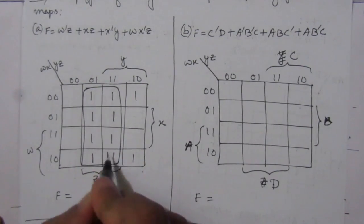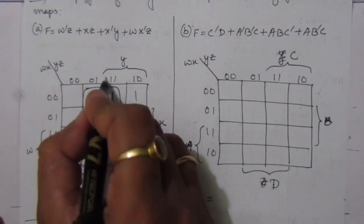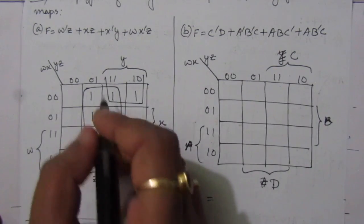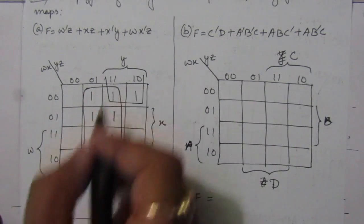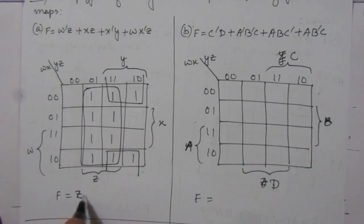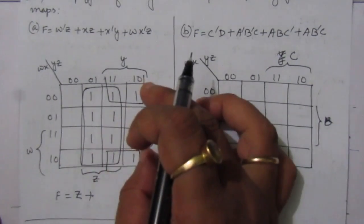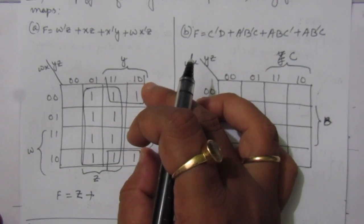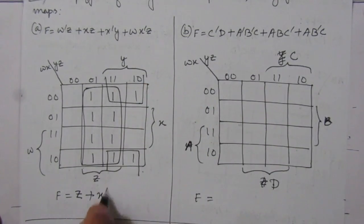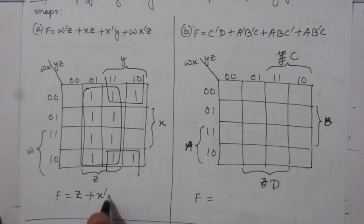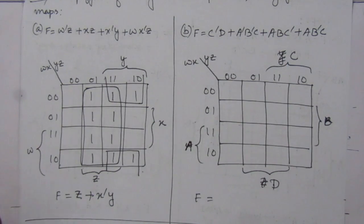After simplification, from the two-row combination we get Z, plus for the combination of the first row and fourth row we have X-bar, and for the third and fourth columns we have Y. So the simplified boolean expression is Z + X-bar Y.